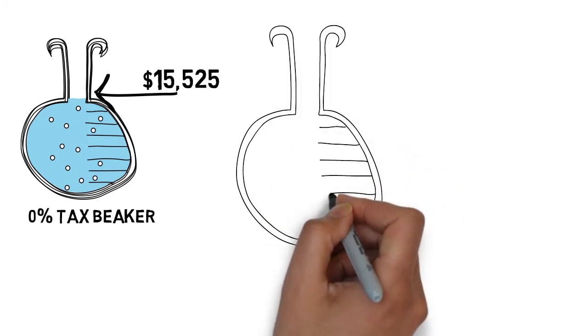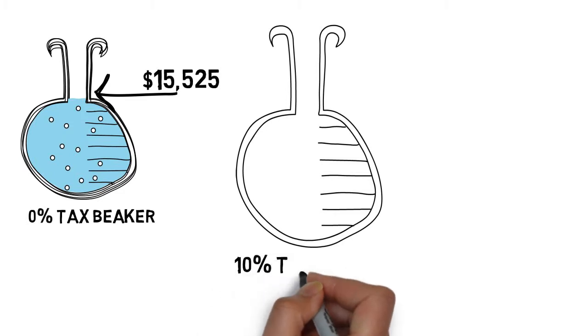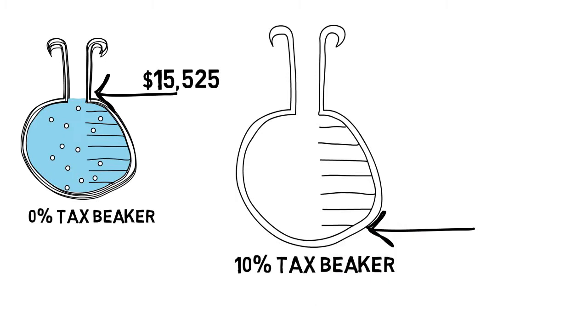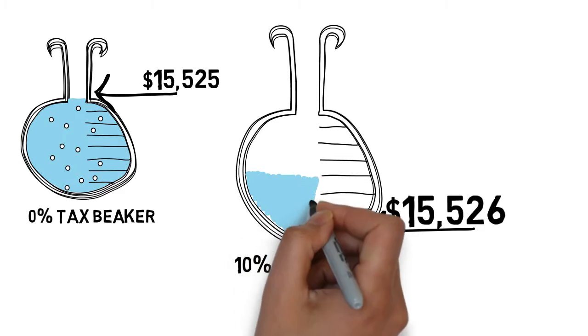Here is a test tube of water going into the glass representing income. If you earned one dollar more than the amount you are allowed to earn and pay zero tax, then on that dollar you'd owe ten cents tax.